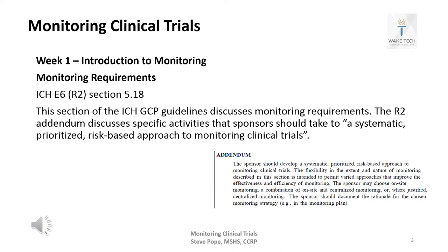Monitoring requirements are found in ICH E6 R2 Section 5.18. This section discusses monitoring requirements, and the R2 addendum — the latest version of GCP documentation — discusses specific activities that sponsors should take to develop a systematic, prioritized, risk-based approach to monitoring clinical trials. A piece of the addendum is copied right on this slide so you can see what it looks like.